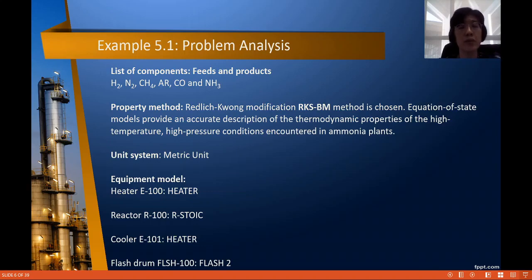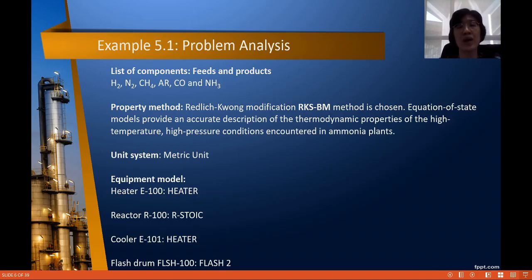For the equipment models, based on the specifications given: for heater E100 we use the heater model; for reactor R100, since the conversion is given, we use RStoic as the reactor model; for the cooler, again we use the heater model, since the heater model covers both cooling and heating processes. For the flash drum, we use Flash2 because there is no two-liquid, two-immiscible-liquid system involved in the process.